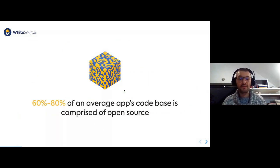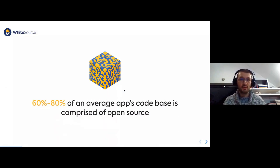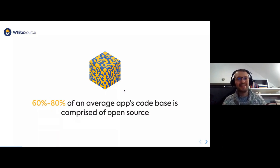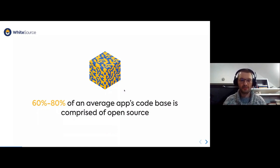60 to 80% of average application code is nowadays built with open source. We tend to build abstract blocks, and on those abstract blocks we add more blocks of abstraction, and then we add more, and finally at the top of all of it, we add our own proprietary code.